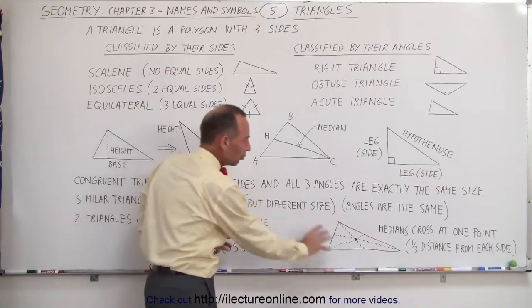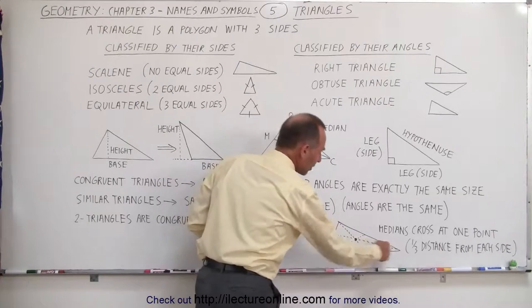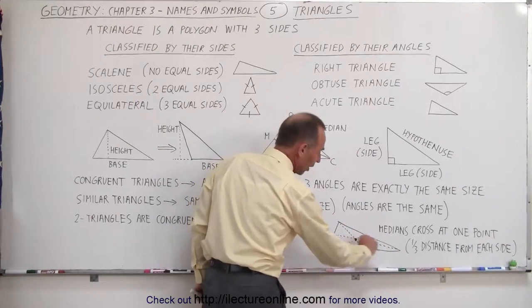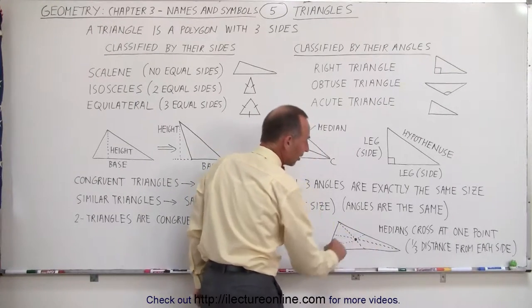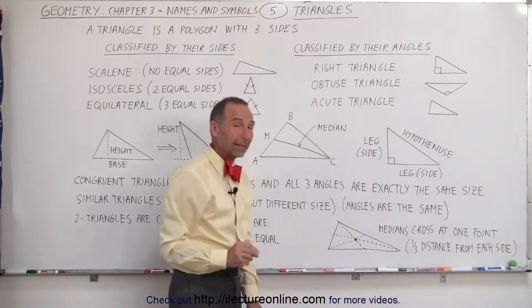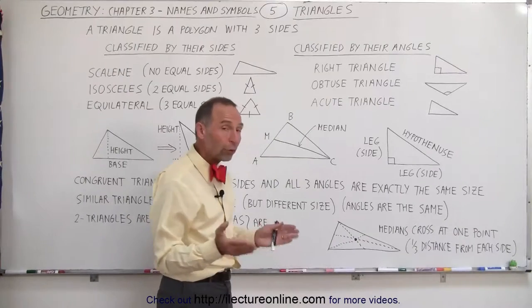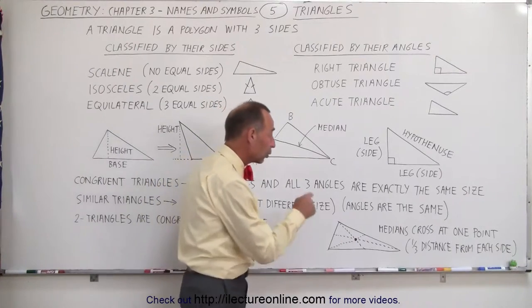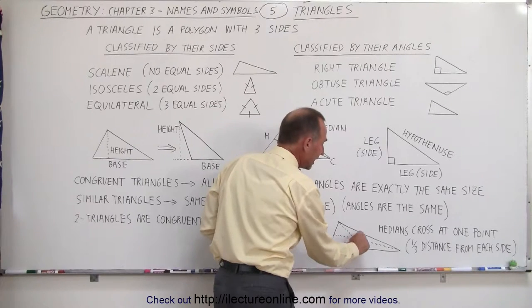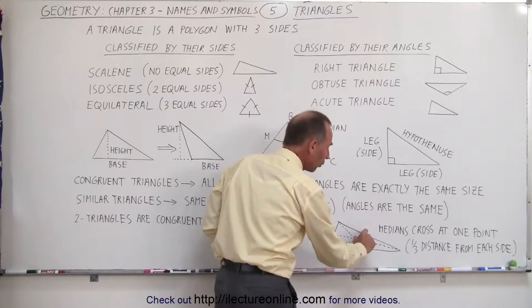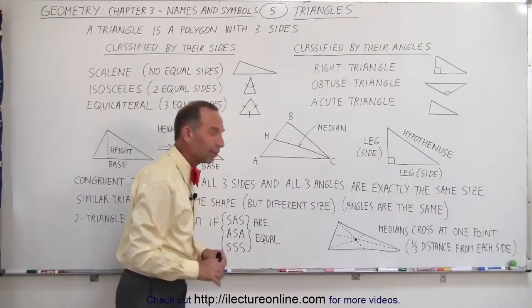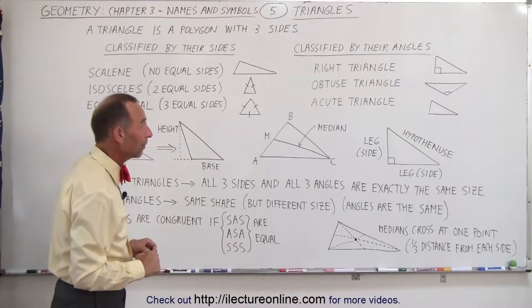If we draw a line from a vertex to the midpoint of the opposite side, that line is called a median. Here we've drawn all three medians with dashed lines, and notice that all three of them cross at a single point. The distance from that point to each of the three sides is one-third the total length of each median.